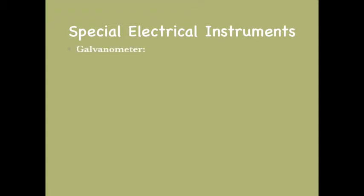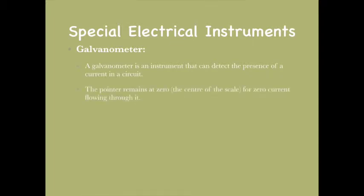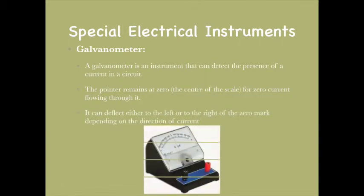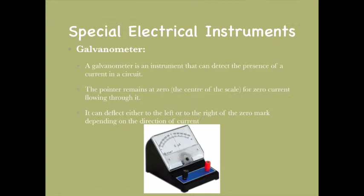Now let's move on to special electrical instruments. The first instrument is the galvanometer, which is an instrument that can detect the presence of current. The pointer remains at zero and deflects either way if the instrument detects any current. A diagram of the galvanometer is shown below.